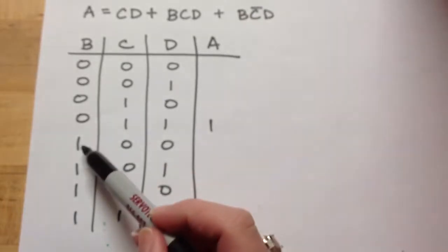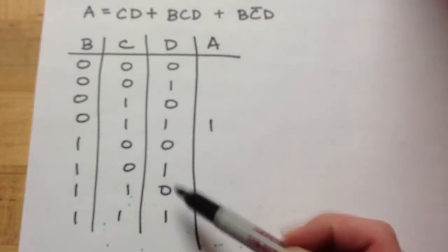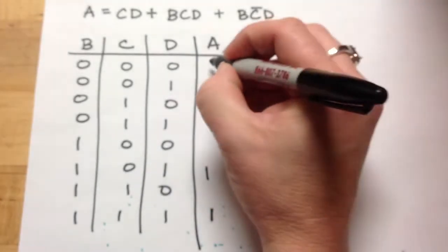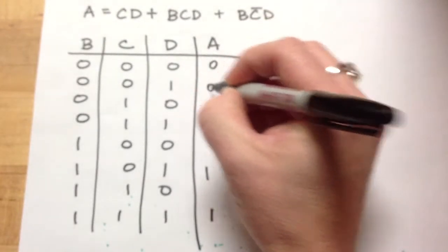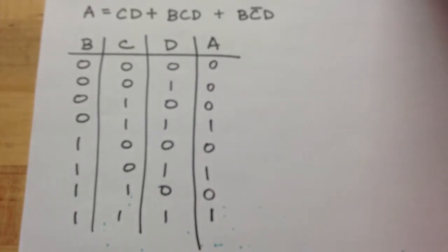So let's see. B is a 1. It doesn't start until here. I'm looking for not C. That's a 0. D, no, that one. All right, so now I've put my 1s in. I need to go back and put my 0s in my truth table. And did you get the right answer? I hope that worked out for you.